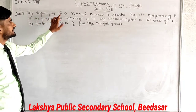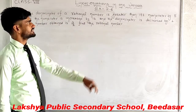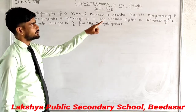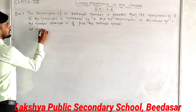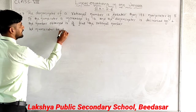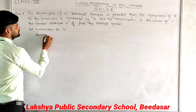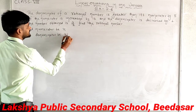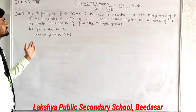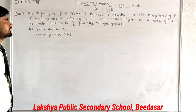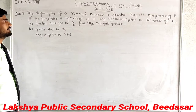The denominator of a rational number is greater than its numerator by 8. We compare to the numerator, so let the numerator be x. Then the denominator is x plus 8. If the numerator is increased by 17 and the denominator is decreased by 1, the number becomes 3 upon 2. Find the rational number.